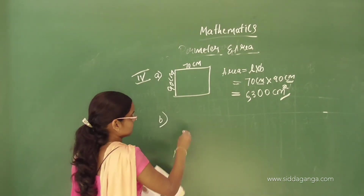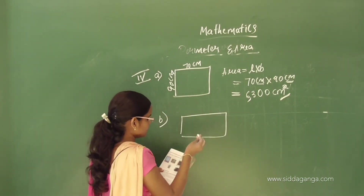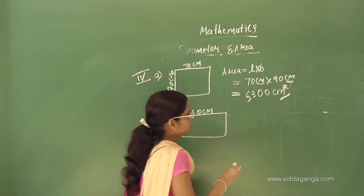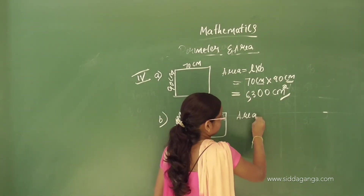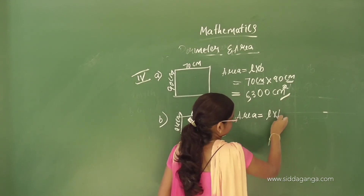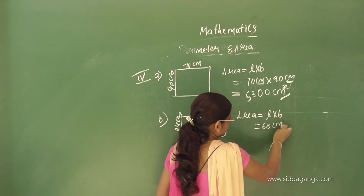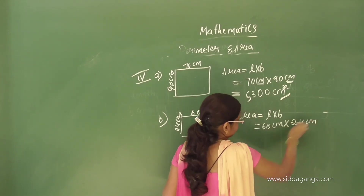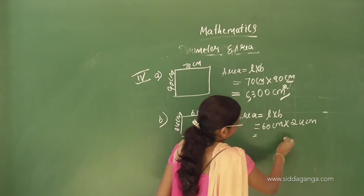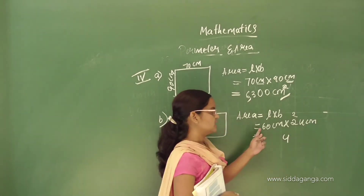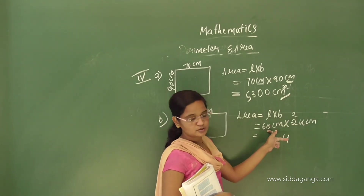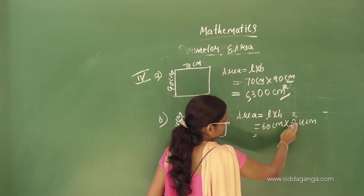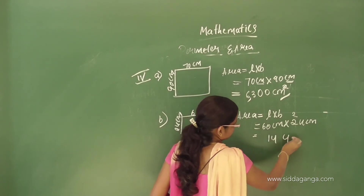Part B: dimensions are 60 cm and 24 cm. Area equals length into breadth. Length is 60 cm, breadth is 24 cm. Multiplying 60 into 24: 6 times 4 is 24, carry 2; 6 times 2 is 12 plus 2 is 14. The answer is 1,440 cm².